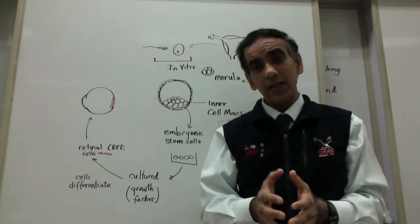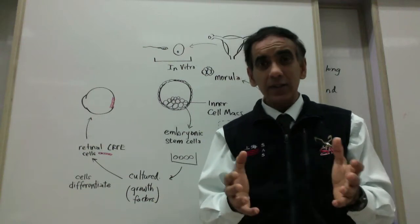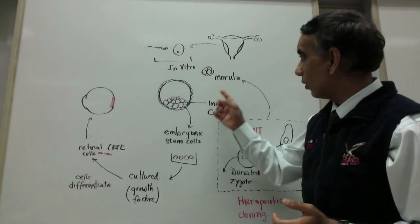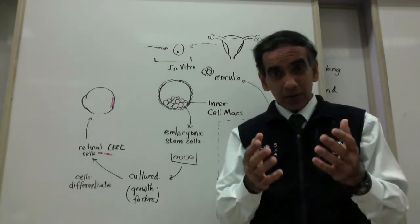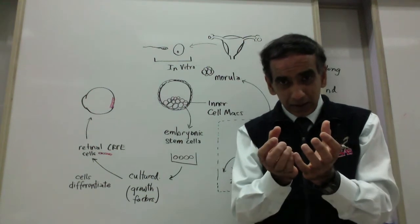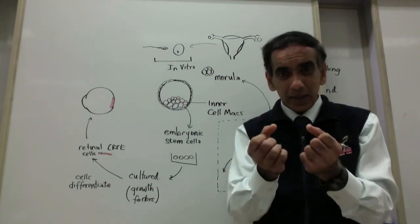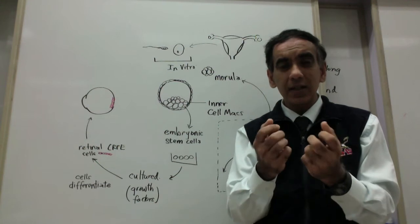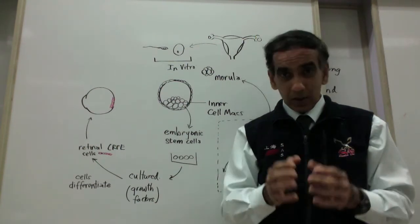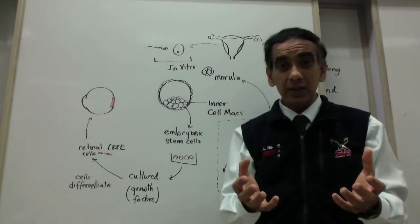This fertilized egg or zygote then goes on to divide by mitosis to form a ball of a few cells called the morula. At the two cell stage, the four cell stage and even up to the eight cell stage, these cells can be separated and each one possesses the capacity to go on to develop independently into a new human being. In other words, all of these cells are totipotent.